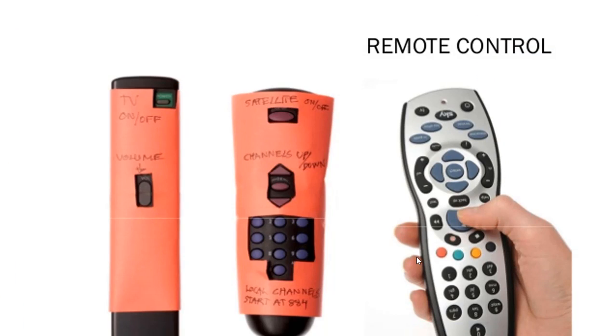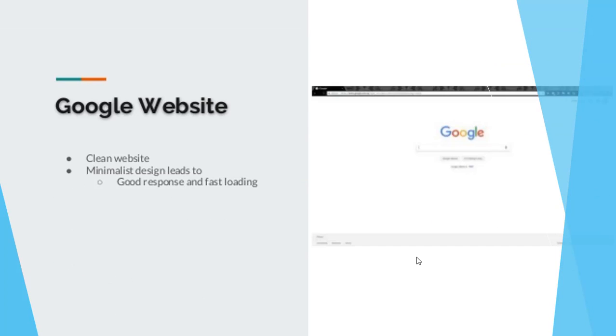As you can see, the remote control device on the right side is easy to use. Google's website is a clean, minimalist design that leads to good response and fast loading.